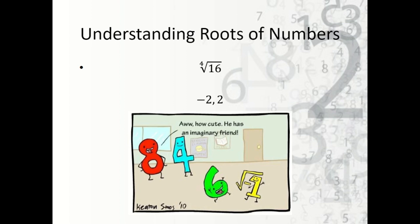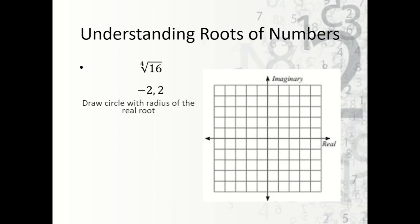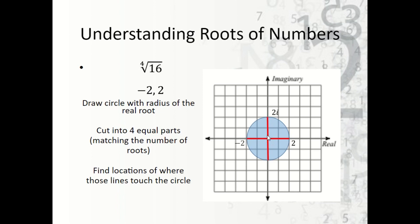The other two roots must be imaginary. If we graph those on the coordinate plane, we draw a circle with radius equal to the real root, which is 2. We cut this into 4 equal parts: 360 divided by 4 equals 90 degrees. Every 90 degrees we have another root. So the four fourth roots of 16 are: 2, 2i, negative 2, and negative 2i.